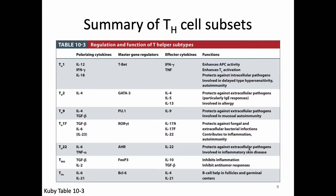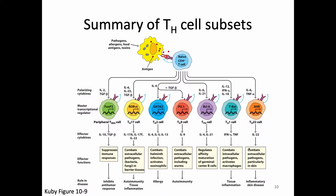Your textbook has a handy table of all the helper T cell subsets we've learned, specifically listing the polarizing cytokines, the master transcription regulator, the effector cytokines, and the functions. There is also a picture showing the same information. You don't need to know about TH22 or TH9, but this is general material you should know.